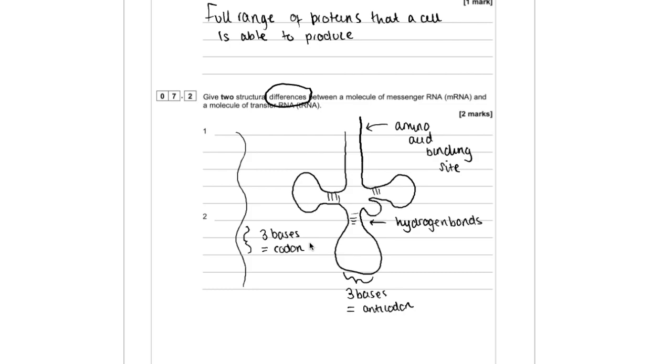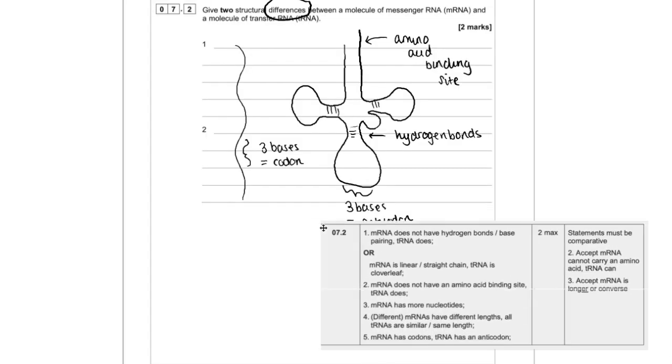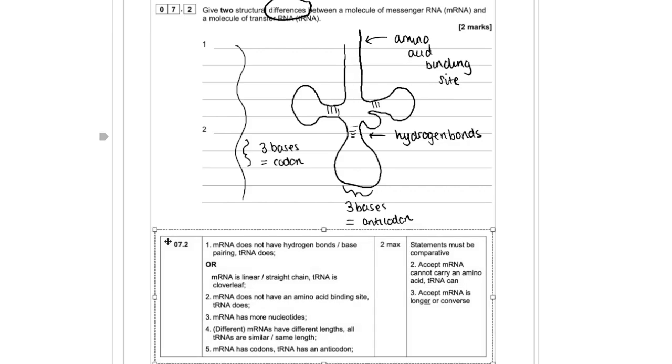I'm just going to show you the mark scheme so we can see the types of points we could have put. I've already mentioned them, but just so you can see them there clearly. You can see on the mark scheme that you always have to make a comment about mRNA and then compare that directly to tRNA.